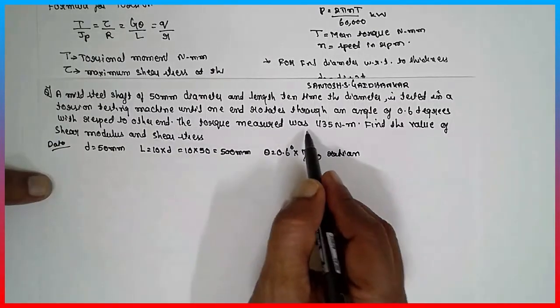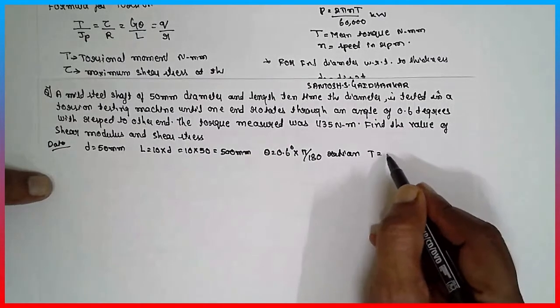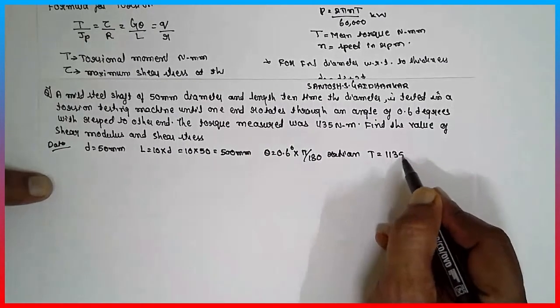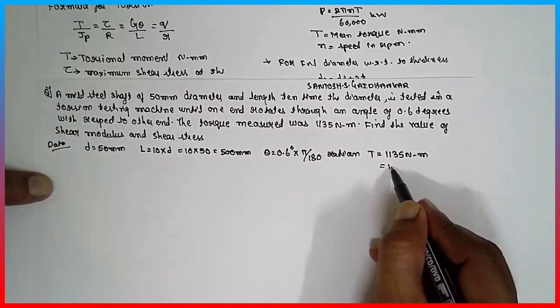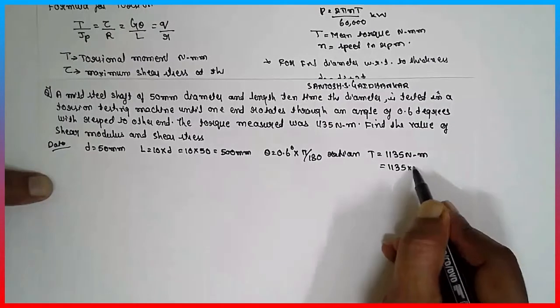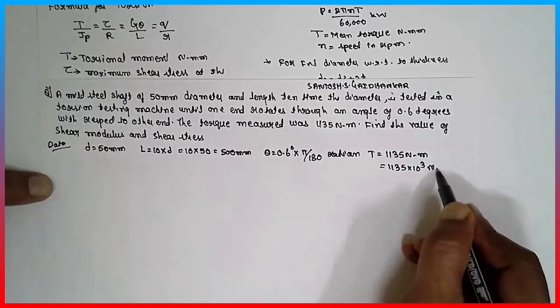With respect to other end, the torque measured was T is given 1135 Newton meter. We have to express in terms of mm, multiply by 10 raise to 3, 1135 Newton mm.